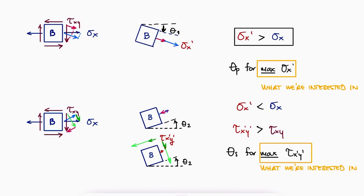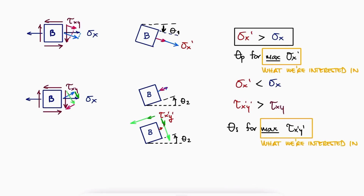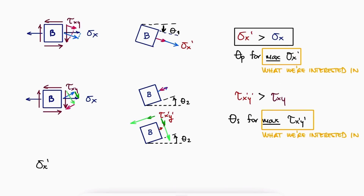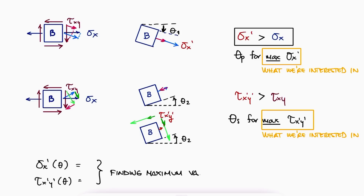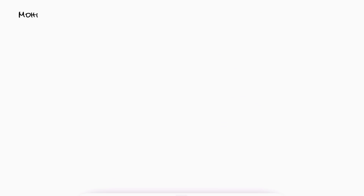For any given rotation theta, we can find an expression that allows us to calculate the new normal stress σx prime and another one for τx prime y prime. Optimizing the values for these expressions — finding their maximum values — can be done either mathematically by taking their derivative and solving for zero, or graphically by plotting their functions and finding the maximum values. This graphical alternative is what we call Mohr's Circle.